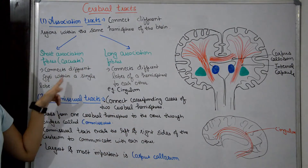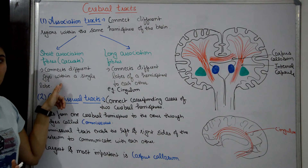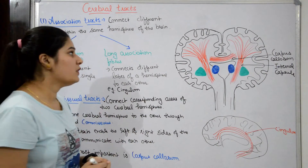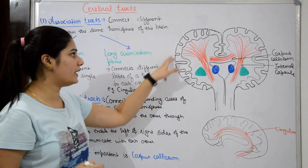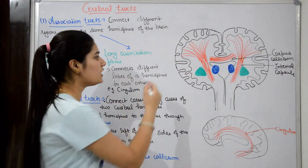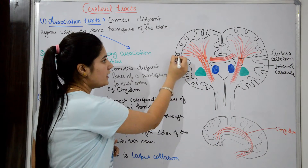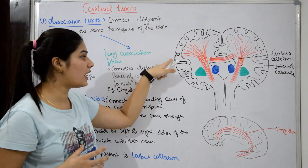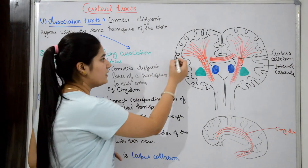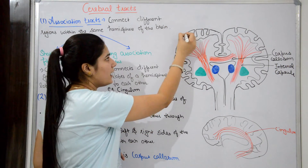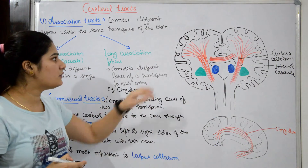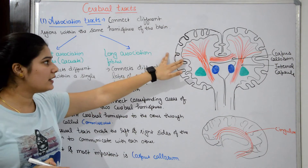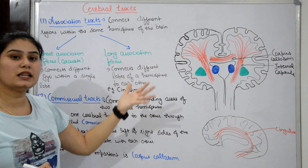Short association fibers connect different gyri within one single lobe — for example, connecting different gyri within the frontal lobe. Gyri are the folds, grooves, and ridges on the outer layer of the cerebrum, the cortex. Gyri separate different regions and help increase the surface area of the cerebrum.